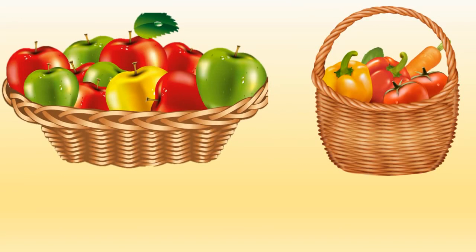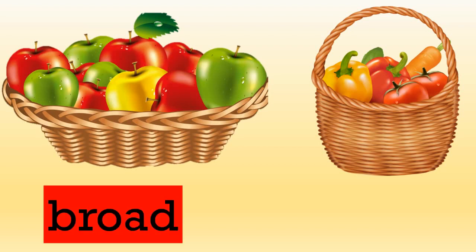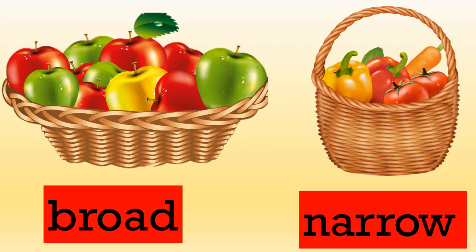Now student, in this example we have two baskets — first, a basket of fruits, and second, a basket of vegetables. In which basket do you see fruits and in which basket do you see vegetables? Yes, the fruits are in the broad basket and the vegetables are in the narrow basket.